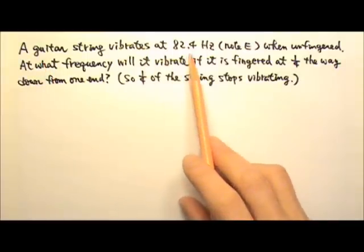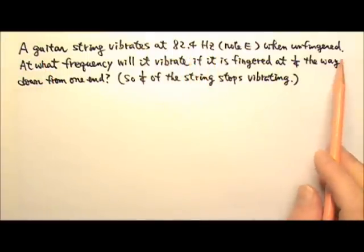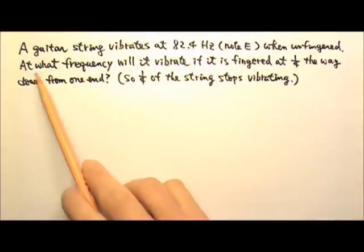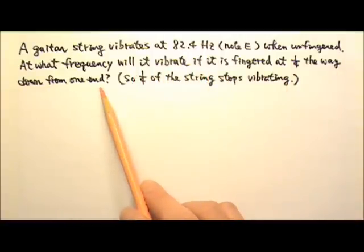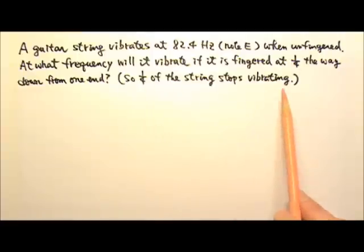A guitar string vibrates at 82.4 Hz when unfingered, and that note is E. At what frequency will it vibrate if it is fingered at one-fourth way down from one end? So one-fourth of the string stops vibrating.